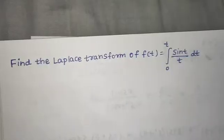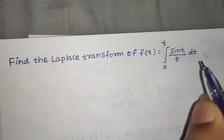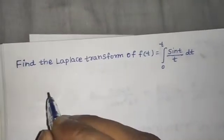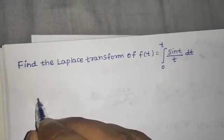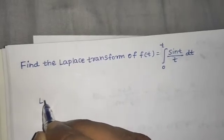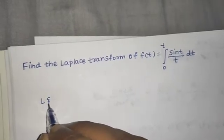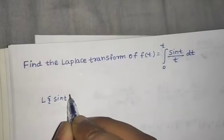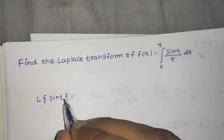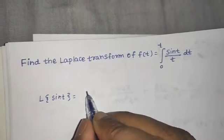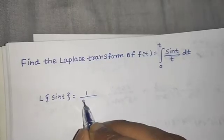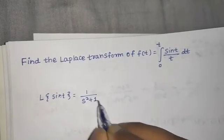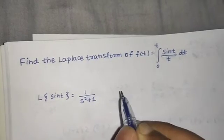The basic idea is to start from the initial thing, which is sin(t). We can find the Laplace of sin(t) easily — that is a/(s² + a²). For sin(t), a = 1, so it's 1/(s² + 1).